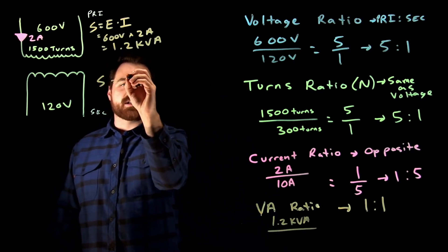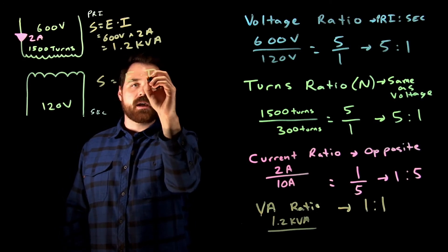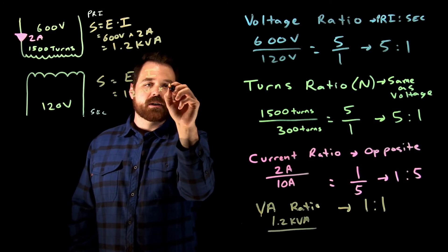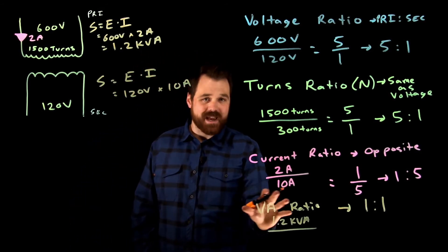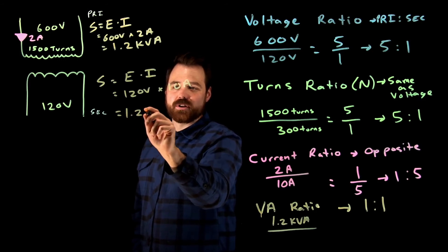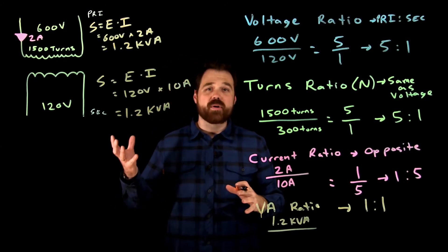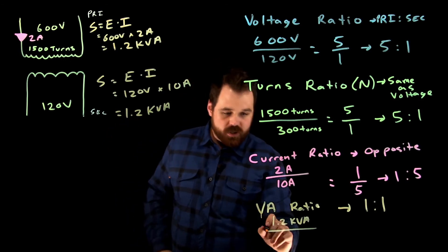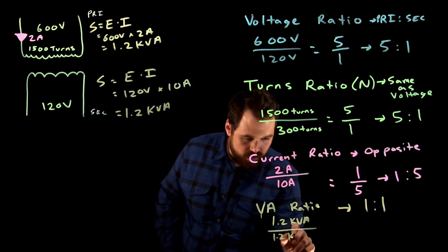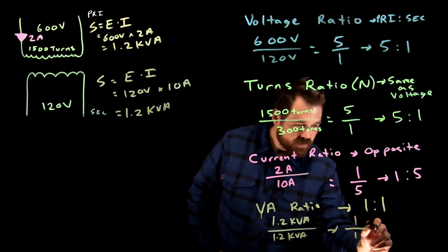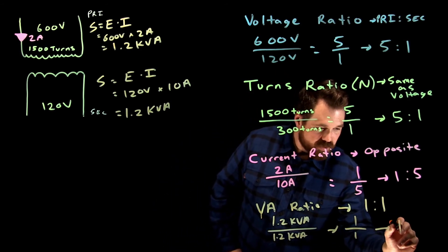Now let's do the secondary. The secondary is again, volts times amps. In this case, it would be 120 volts times 10 amps. 10 amps is what we calculated here. That again is going to give us 1.2 kVA or 1,200 volt amps. So when we put that here, 1.2 kVA, that equals one. So just like we planned, that equals one.